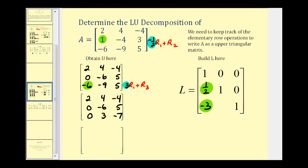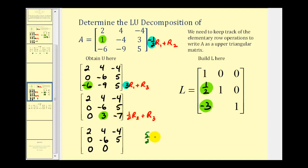For the last step, to obtain a zero in the row three, column two position, we'll add one half of row two to row three. The first two rows stay the same. One half of zero plus zero is zero; one half of negative six is negative three plus positive three, that's zero; and one half times five is five halves, plus negative seven which is negative fourteen halves, giving negative nine halves. So this element is negative nine halves. Our multiplier was positive one half to obtain a zero in row three, column two, so row three, column two of our lower triangular matrix is the opposite of positive one half, or negative one half.